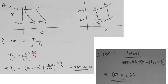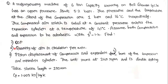Substituting P2/P1 = 5.2/1 and the exponent (1.4−1)/1.4 gives T2 = 462.88 K. Substituting T1 and T2 into the COP formula: COP = T1 / (T2 − T1). The COP works out to 1.66. That completes part one.